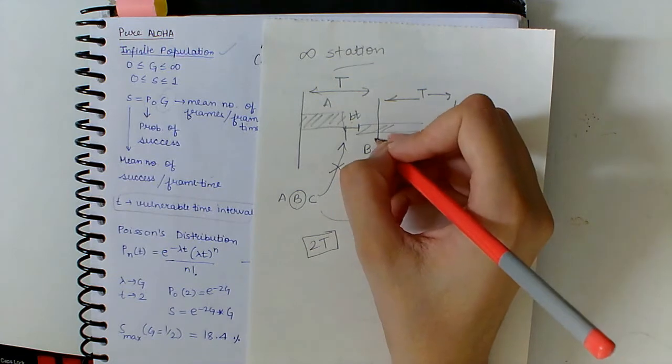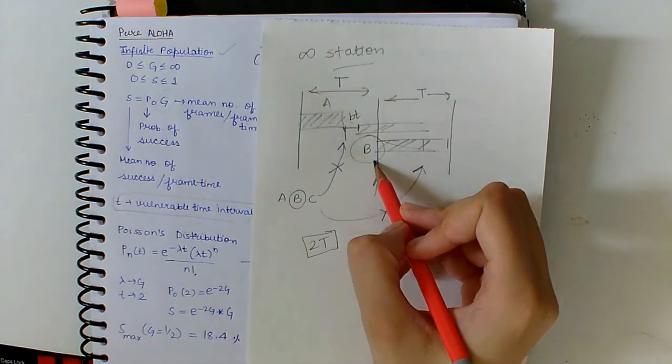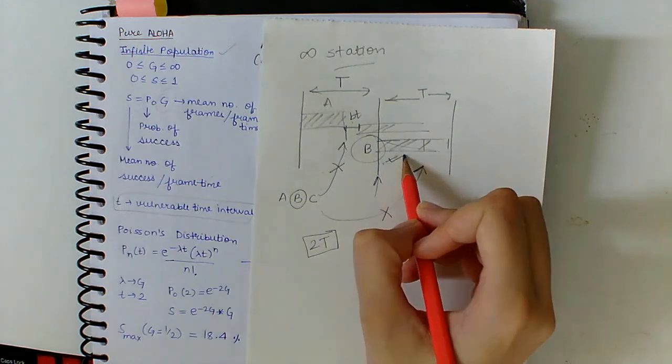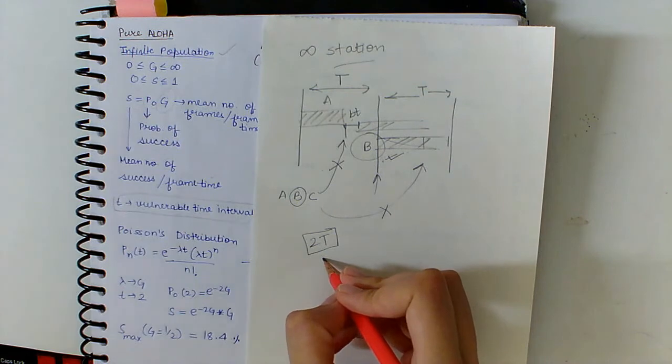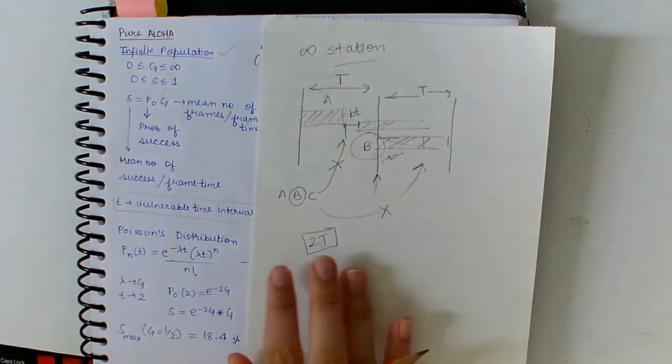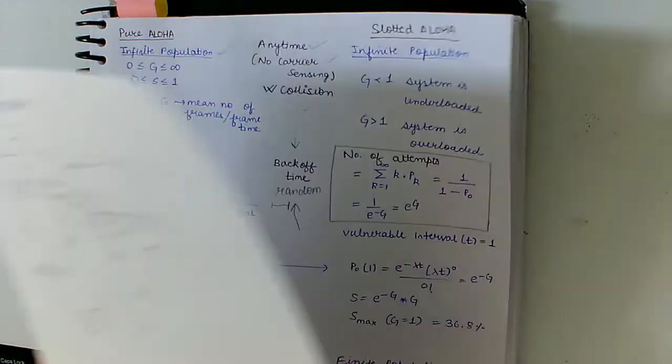This will collide with our station B, who wants to transmit after some time, so we don't want this. So 2T is the vulnerable time interval in this case.